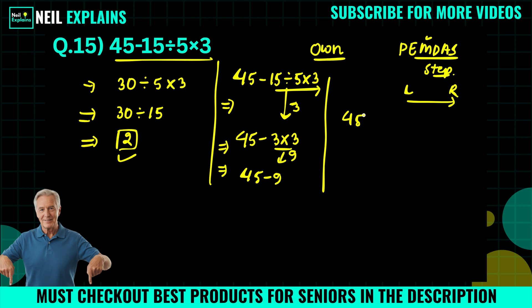Now when we subtract 9 from 45, you will get 36.